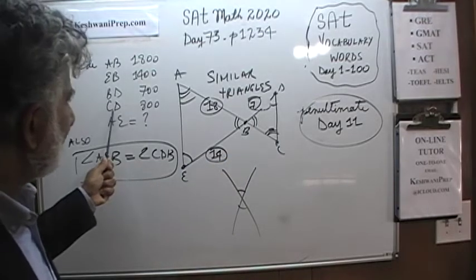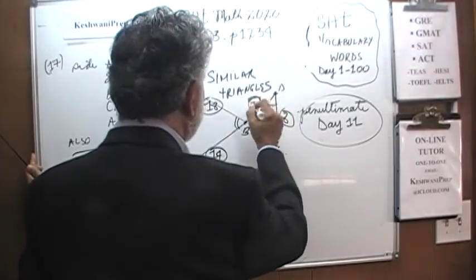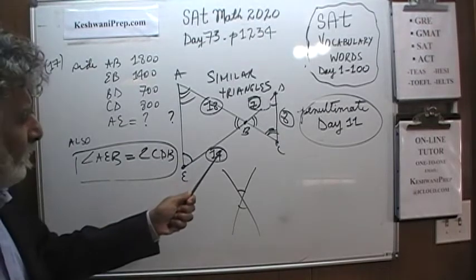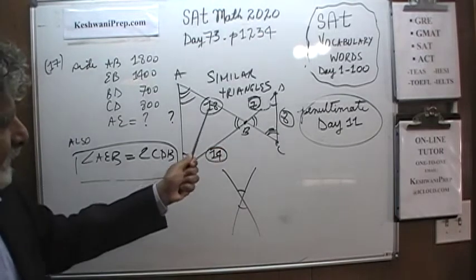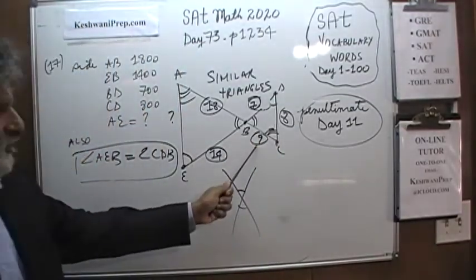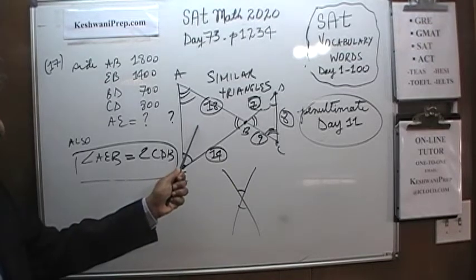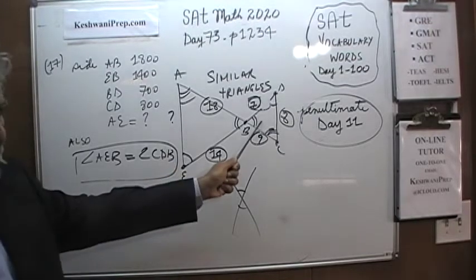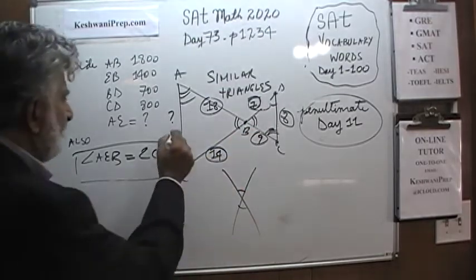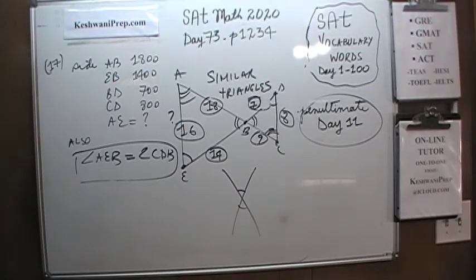We know CD is 800. This is 8 and this is 7. What we want to find out is AE. This is 14, that's 7, this is 18, which means this must be 9. We are not interested in that one. We are interested in AE. We just established that the bigger triangle is twice the size of the smaller. DC is 8, so AE must be 16.